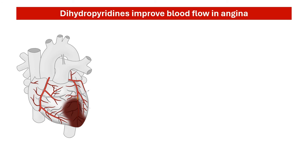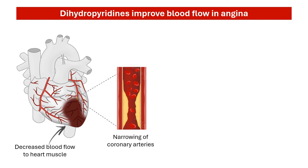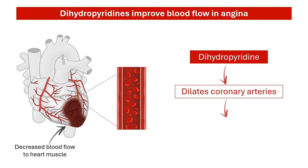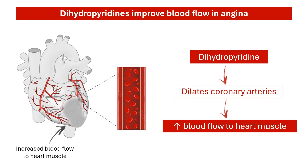This group of drugs is also used in treating angina pectoris, a pain caused by decreased blood flow to the heart muscle. This is due to the narrowing of the coronary arteries, the blood vessels that supply blood to the heart. In these cases, dihydropyridines dilate coronary arteries and improve blood flow to the heart muscle.